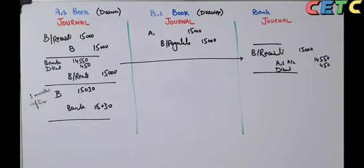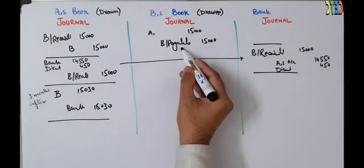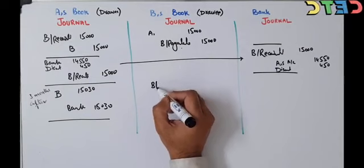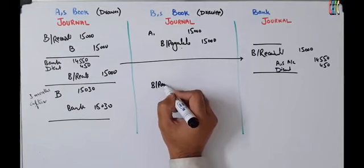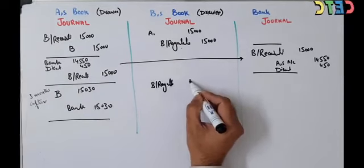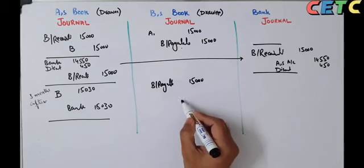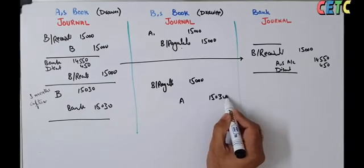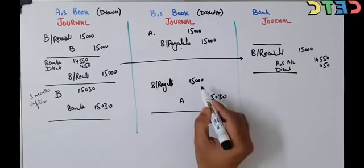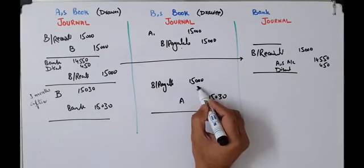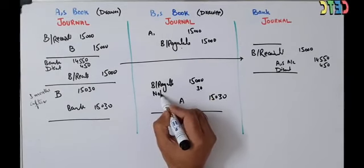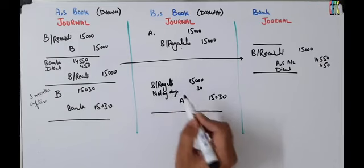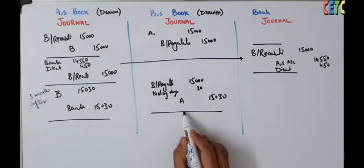B ने bill dishonor कर दिया। B की book में जो Bills Payable credit था उसे cancel करना होगा — Bills Payable debit ₹15,000। A का नाम credit ₹15,030 से होगा। Difference ₹30 Noting Charges कहलाएगा। Entry: Bills Payable debit ₹15,000, Noting Charges debit ₹30, A's Account credit ₹15,030।